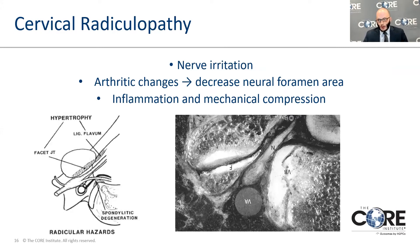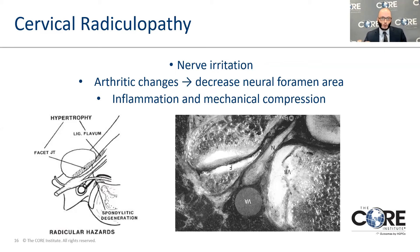Cervical radiculopathy — irritation of the nerve as it leaves the spinal column — is caused by arthritic changes and can also be caused by disc herniations. Disc herniations usually present more acutely. With arthritis being the most common cause, there's basically a decrease in the area available for the nerve to leave the spinal column. The nerve is irritated and pinched, leading to both mechanical compression and inflammatory-mediated changes. Some of the medications we use treat symptoms by focusing on this inflammatory pathway.